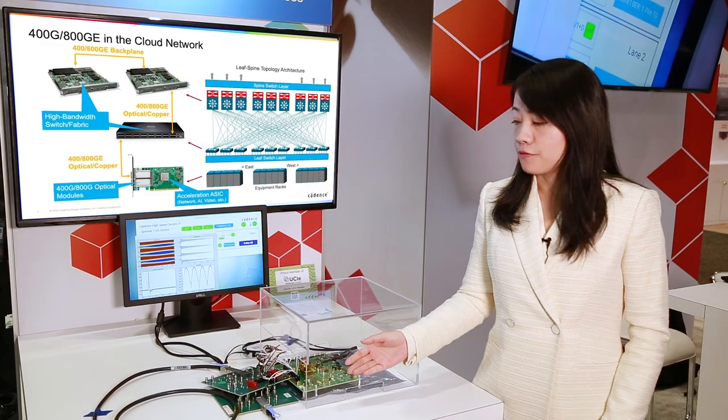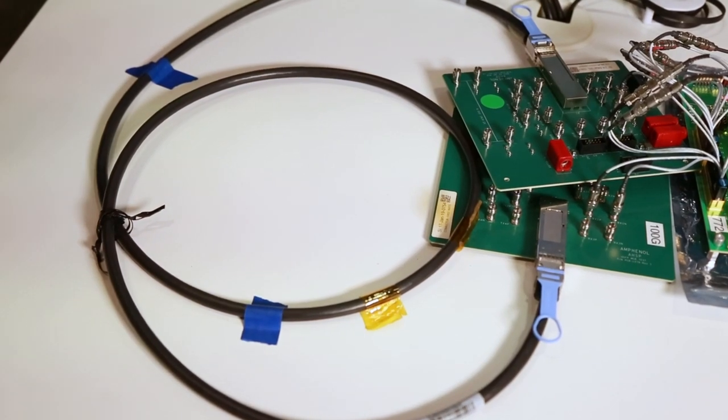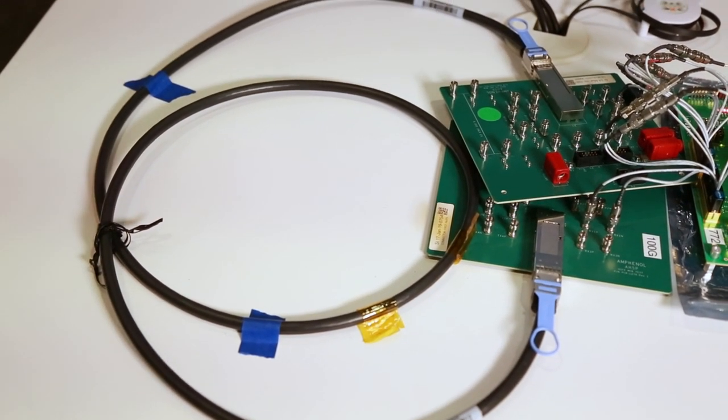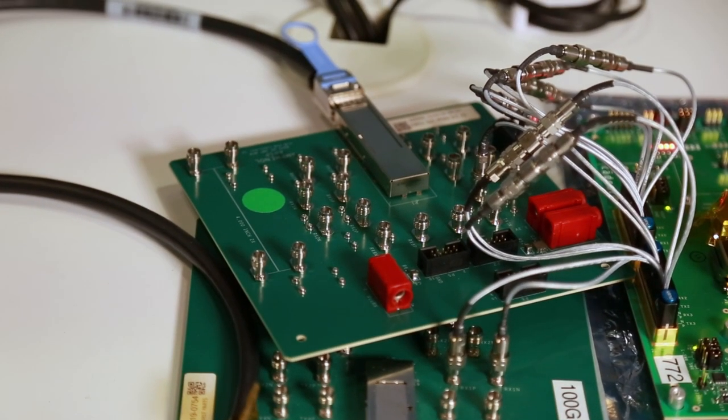The long-range channel is formed with 2m QSFP DAC passive copper cable with MCB boards connected to the service receiver and transmitter.